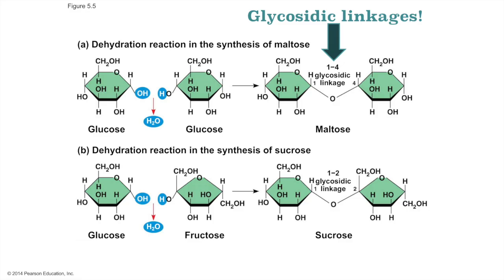Reminder: building up of biomolecules is by dehydration reactions and breaking down by hydrolysis. Here we see the making of a glycosidic linkage and the removal of an OH and an H to make a molecule of water. Also note that maltose and sucrose have glycosidic linkages that are not quite identical. In maltose, it's a 1-4 glycosidic linkage because carbon-4 of one glucose molecule is attached to carbon-1 of the other. In sucrose, it is a 1-2 glycosidic linkage. While there are relatively few monomers, tying them together differently can give us different emergent properties.